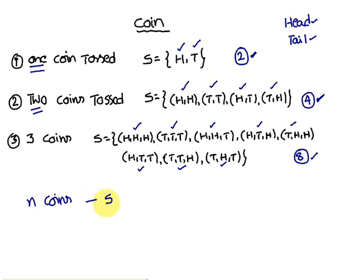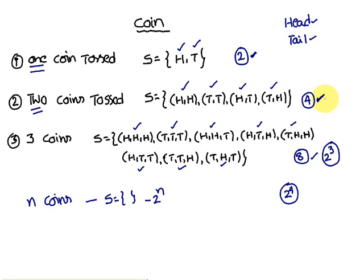From this pattern you can conclude that if n coins are tossed, the sample space consists of 2 to the power n elements. For example, four coins tossed gives 2^4 elements, three coins gives 2^3, two coins gives 2^2, one coin gives 2^1.